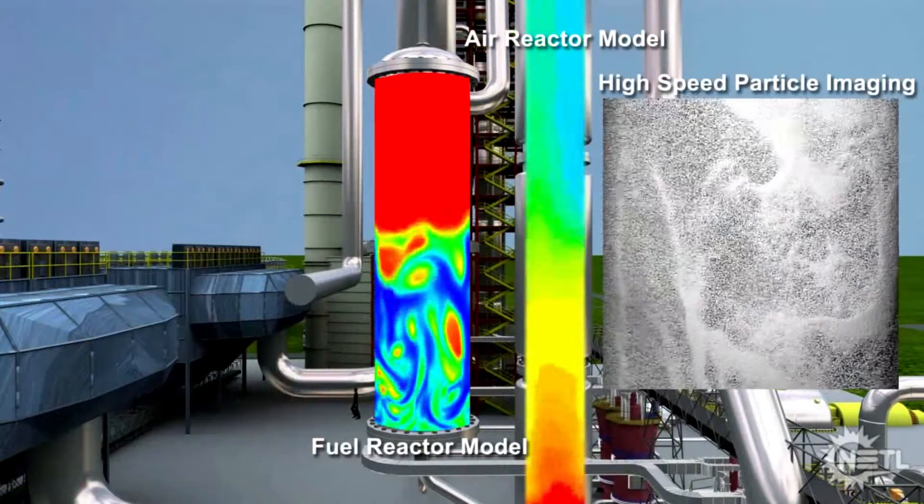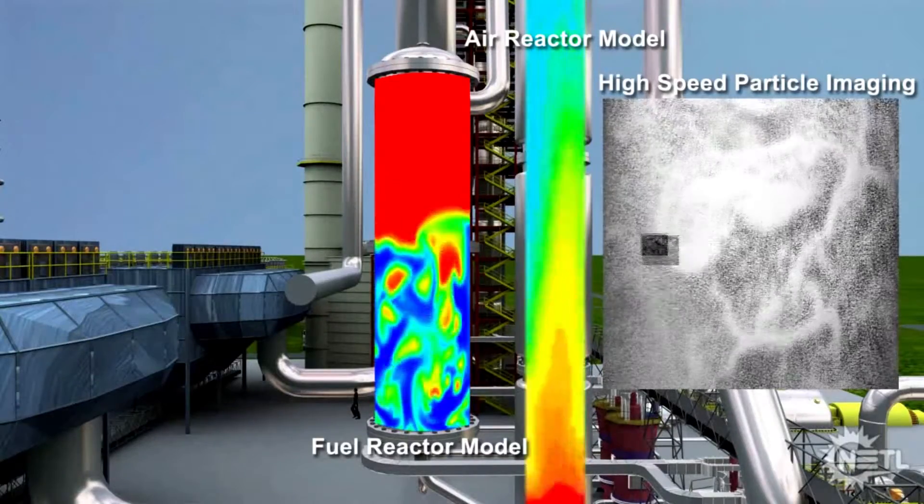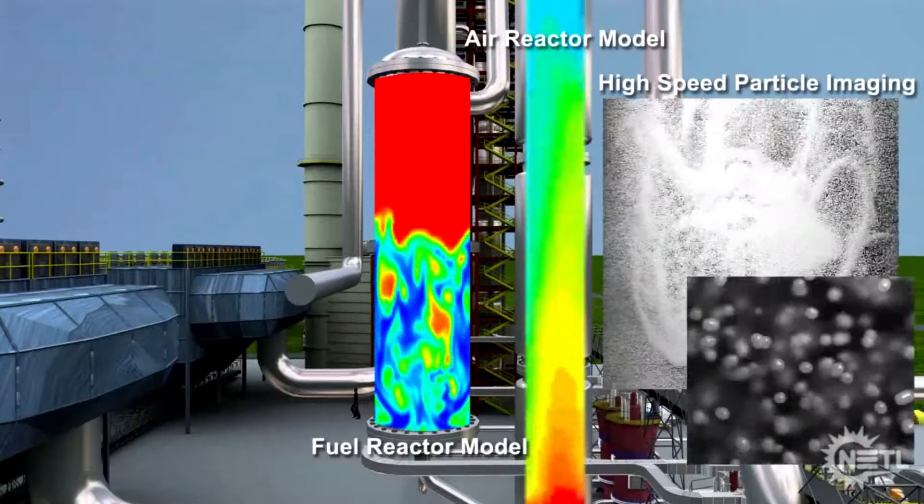The flue gas from the fuel reactor is a mixture of carbon dioxide and water. The carbon dioxide can be recovered by simply condensing the water vapor.